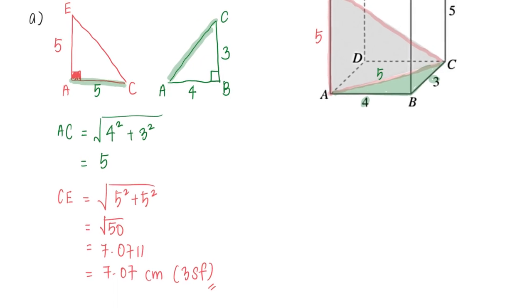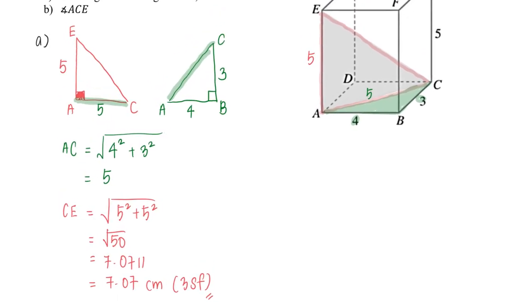For part B, I need to find angle ACE, which is this angle here. Since I already know the lengths 5 and 5—AE and AC—I just need to apply SOHCAHTOA.